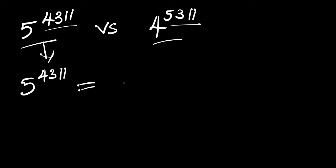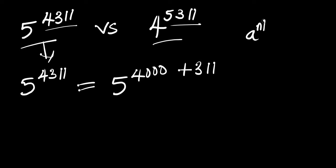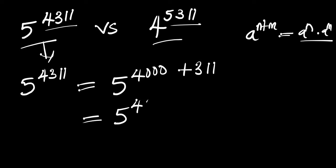Let's consider this. We have 5^4311, and we can write this as 5^(4000 + 311). Then we use the identity: if you have a^(n + m), this equals a^n times a^m. Applying this identity, we get 5^4000 times 5^311.